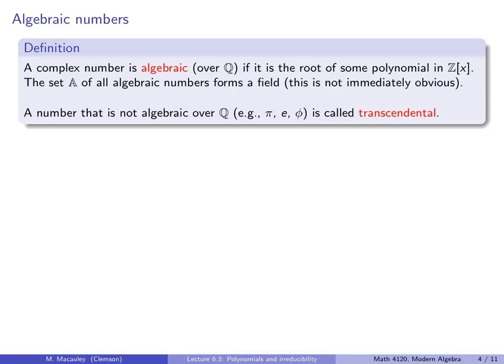A number that is not algebraic over Q — things like π, e, or the golden ratio φ — is called transcendental. It's also not immediately obvious that these numbers are not secretly the root of some polynomial, but it is a well-known fact that these numbers are indeed transcendental.